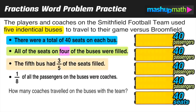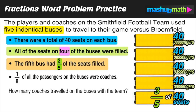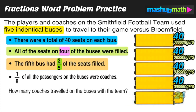That fifth bus is a different story — it's only three-fifths full. So out of those 40 seats, we want to know what three-fifths of 40 is. One-fifth of 40 is 8, since 40 divided by 5 is 8. Two-fifths would be 16, so three-fifths of 40 is 8 times 3, which is 24. The fifth bus has 24 passengers.